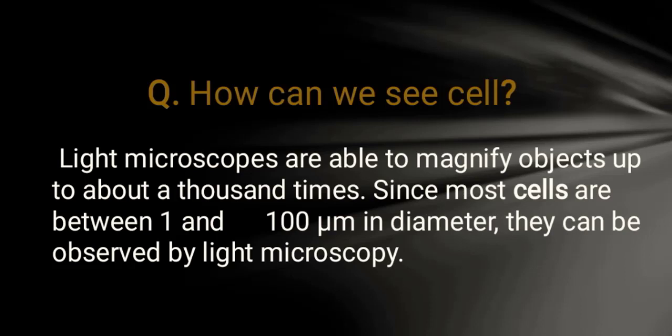The cell size is basically one to 100 micrometers in diameter. Most of the cells are between one and one hundred micrometers in diameter. They can be observed by the light microscope.